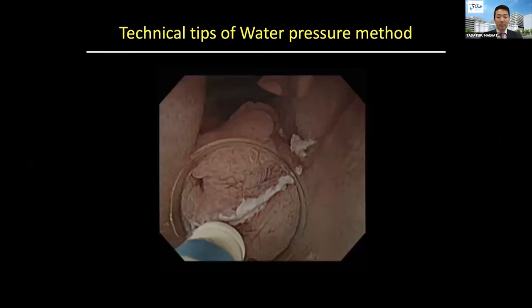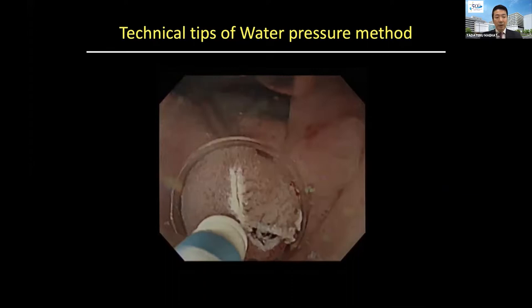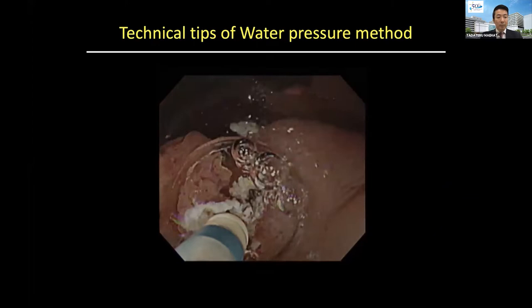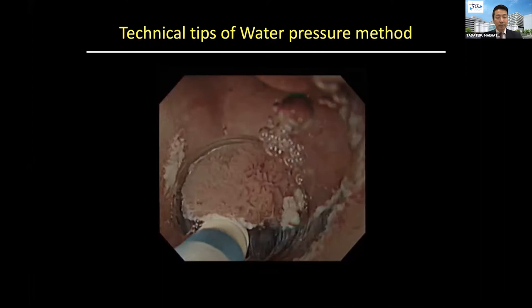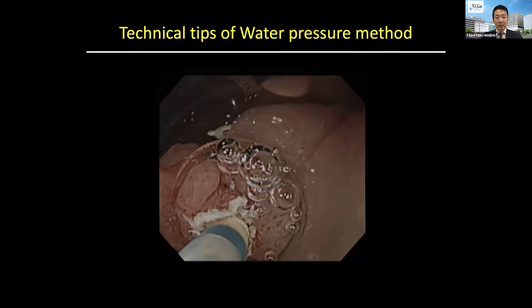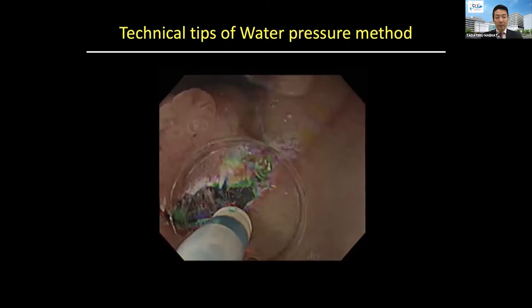Let me show you a video. After making our initial mucosal incision, the submucosal layer is difficult to visualize. After filling the inside of the lumen, the mucosal flap is floated by the buoyancy force. Water pressure using the water jet function further expands the mucosal incision line and improves visualization of the submucosal layer. We can dissect the submucosal layer while directly viewing it, which allows for a safe procedure.